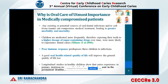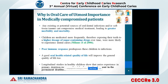Why is oral care of utmost importance in these individuals? Any existing or potential source of oral or dental infection can lead to greater morbidity and mortality in these children. These children are on long-term medications which increases their sugar exposure on the teeth. They have a very poor immune response that predisposes them to bacterial, viral, or fungal infections. Good oral health quality of life will definitely help these individuals to have a good general quality of life too.